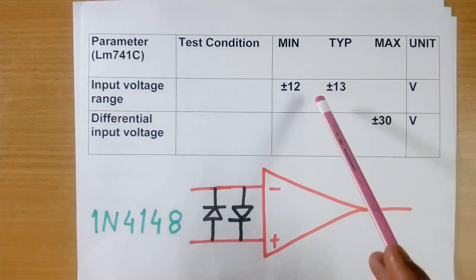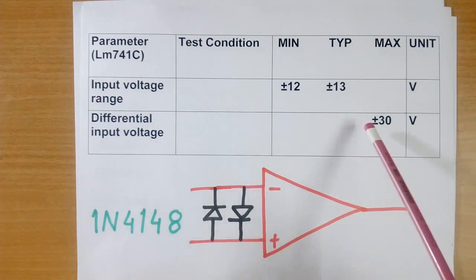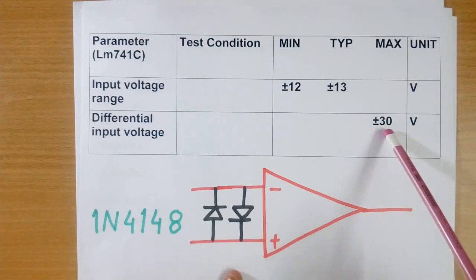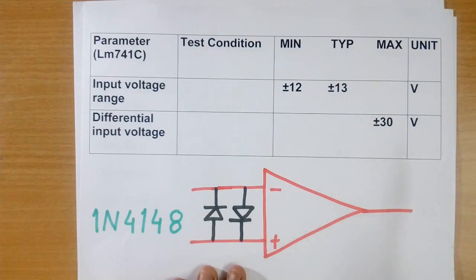Now input voltage range is shown plus minus 13 volt, and differential input voltage is shown plus minus 30 volt. What happens, even if we keep this limit to input, because of spikes, voltage may cross 30 volt and IC may fail.